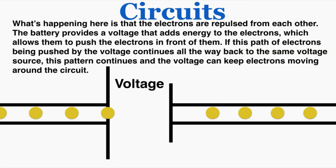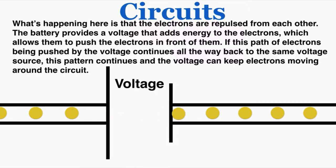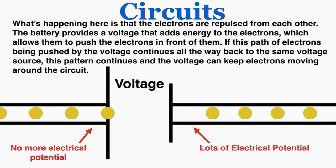The reason the battery is able to push electrons is that electrons repel each other. The battery provides a voltage that adds energy to the electrons, which allows them to push the electrons in front of them. If this path of electrons being pushed by the voltage continues all the way back to the same voltage source, the voltage can keep electrons moving around the circuit. By the time they get back to the battery there's no more electrical potential, but when they move across the voltage there's lots of electrical potential — so the battery is basically the thing pushing them along.